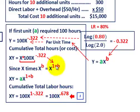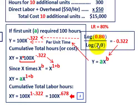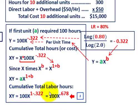That's how we arrived at 0.678 for our cumulative total hours. We first determined the exponent for the individual per unit amount based on our learning rate — log of 0.80 divided by log of 2.0 — giving us negative 0.322. Then for cumulative total labor hours using X times Y, we get 1 minus 0.322, which gives us 0.678.